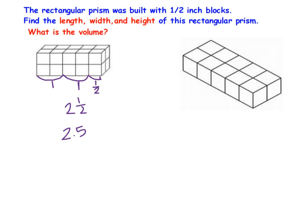Okay, then when I look at the width it's two blocks wide, that is one. So we've got 2.5 by 1 and then the height again is two blocks, so by 1. There's my length, width, and height for that rectangular prism.